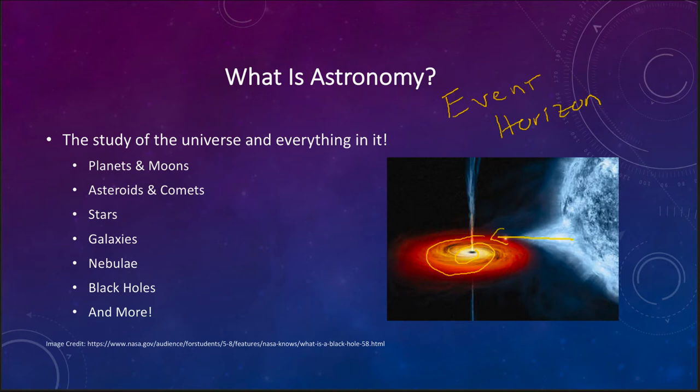As this material spirals in it's heated up to very very high temperatures and that allows it to give off radiation that can then be detected. Once it crosses this event horizon we can no longer get any more information about that black hole. These are just some of the objects that astronomers study, not a complete list by any sense. There are a lot more objects that we will study.